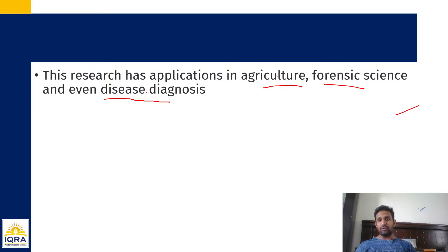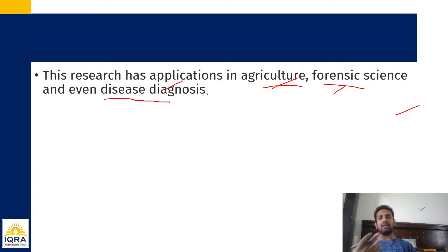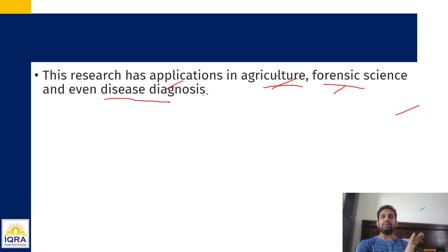So the only thing that you have to remember from this lecture is: coffee ring effect has got wide ranging applications — in the field of agriculture, forensic science, and even diagnosis. Aapko itna hi yaad rakhna hai. Iske upar aur zyada deep theory nahi mention ki gayi hai, nor isme still scientific developments nahi huye hain. Toh aapko bas yaad rakhna hai ki coffee ring effect kya hai aur isse yeh applications hum derive kar sakte hain in future.